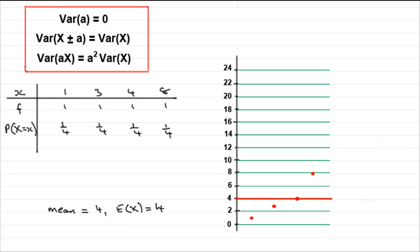Now suppose we were to add, say, 3 to every one of these observed values. We would have x plus 3. Our new values would be the 1 plus 3, that would be 4. 3 plus 3, 6. 4 plus 3, 7. And 8 plus 3 would be 11.